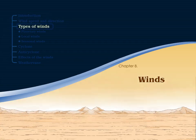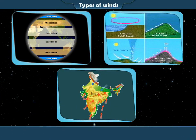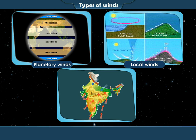Types of Winds. There are three main types of winds: A. Planetary Winds, B. Local Winds, and C. Seasonal Winds.